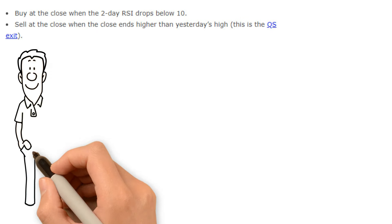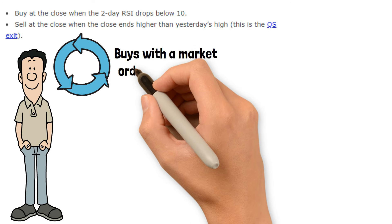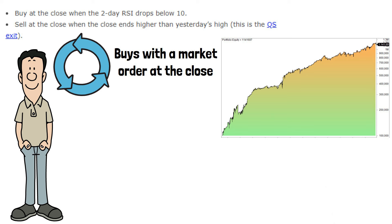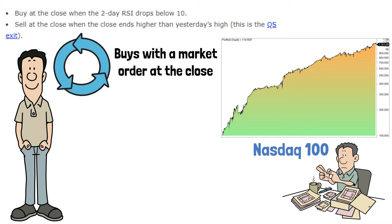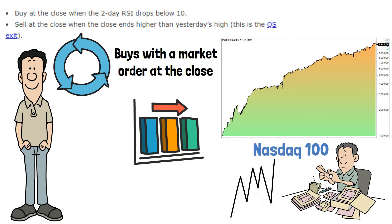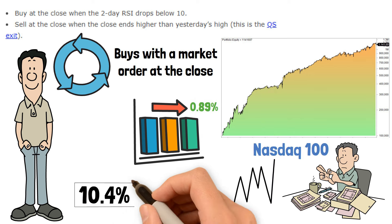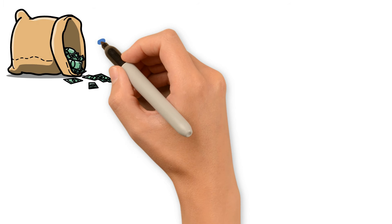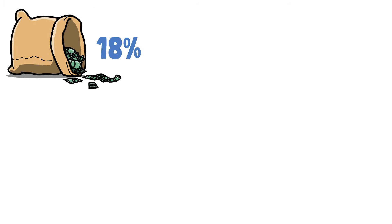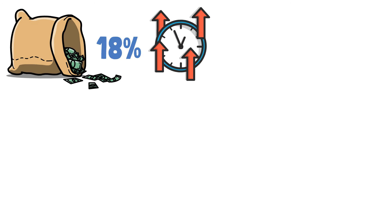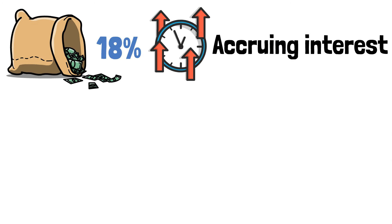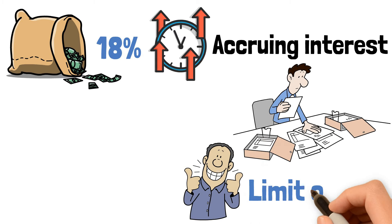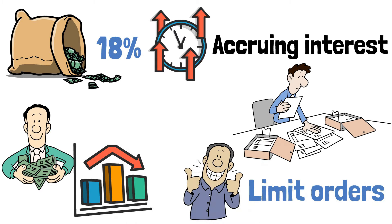We start with a basic mean reversion strategy that buys with a market order at the close. When we backtest the trading strategy on NASDAQ 100, it performs well. The average gain per trade is 0.89%, which equals 10.4% compounded annually. The strategy is invested only 18%, and thus the capital is idle for long periods of time, for example accruing interest. Mean reversion is a type of strategy that's optimal for limit orders because you buy on weakness and sell on strength.